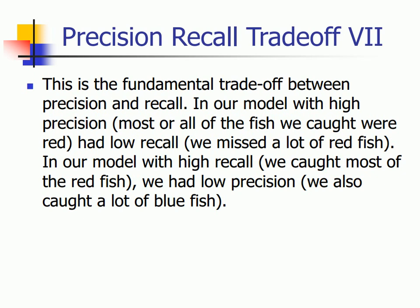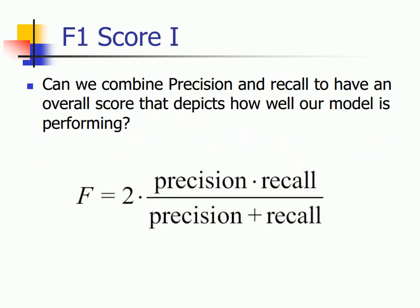This is the fundamental trade-off between precision and recall. In our model with high precision, most or all of the fishes caught were red, but it had a low recall. But if we design a model with high recall — that is, we caught most of the red fishes — we had a low precision, as we also caught a lot of blue fishes. Can we combine precision and recall to have an overall score which depicts how well our model is performing? In comes my F1 score.